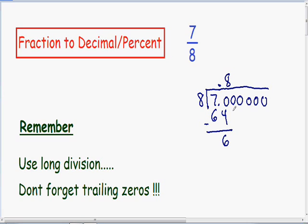Now we need to bring down our next zero. 8 goes into 60, 7 times. 7 times 8 is 56. And if we subtract 60 minus 56, we get 4.